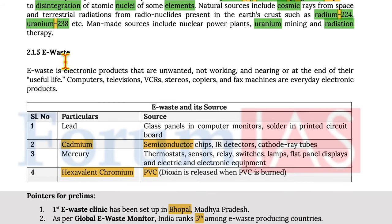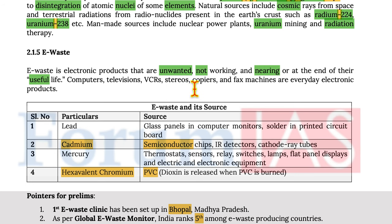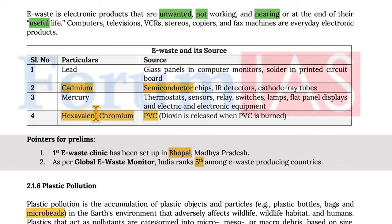Moving on to e-waste — e-waste consists of electronic products that are unwanted, not working, and nearing the end of their useful life. Examples of everyday electronic products include computers, televisions, VCRs, stereos, copiers, and fax machines.